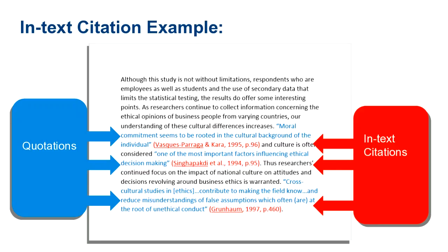Here we have examples of in-text citations and what they look like in a piece of writing. We have our direct quotations marked in blue. You will see that we indicate their quotations by using quotation marks. Following the quotations are the in-text citations marked in red. Because we have quoted the authors directly, we include the author's surname, year of publication, and the page number of where we took the quote from.